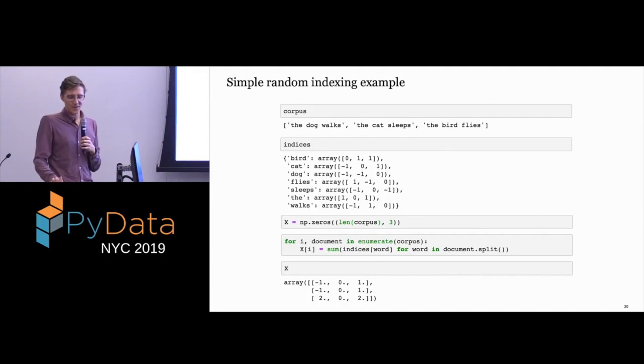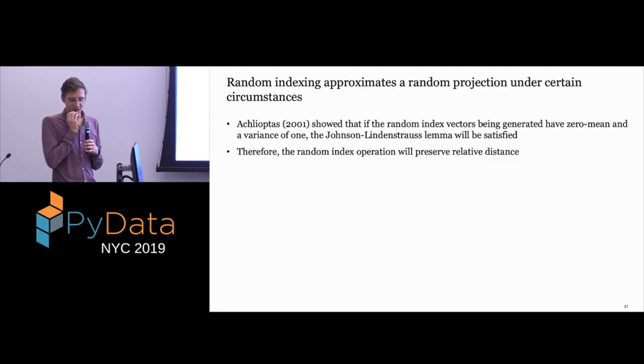So why did we talk about random projections at all? It seems kind of useless. Random indexing turns out to actually approximate a random projection under certain circumstances. It's the way that you're choosing the non-zero values in those index vectors. Achlioptas in 2001 showed that if you choose your index vectors carefully, you'll be approximating the Johnson-Lindenstrauss lemma. So that means that when we do the random indexing from our original data, we'll be preserving approximate distance or relative distance. But we haven't quite done that orthogonality result yet. So how do we get that? That will be the next question that we answer, which is hopefully solved by lightweight random indexing.